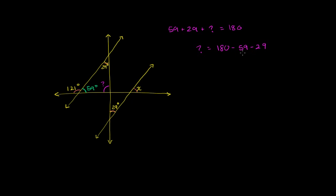And then 121 minus 29. So if you subtract just 20, you get 101. You subtract another 9, you get 92. So that's going to be equal to 92 degrees. This is equal to 92 degrees.